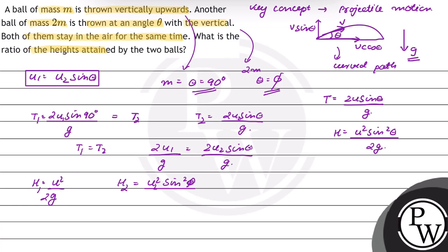So the ratio H1 / H2 = u1² / (u2² sin² θ). From equation 1, u1 = u2 sin θ, so u1² = u2² sin² θ. Therefore, H1 / H2 = u2² sin² θ / (u2² sin² θ), and these cancel out.